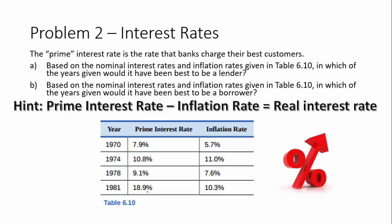Lenders love high real interest rates — that's their income. So the higher the real interest rate, the better for a lender. For borrowers, we want the lowest real interest rate. What you need to do is go year by year and calculate prime interest rate minus inflation rate for each row. The highest real interest rate is the best year to be a lender; the lowest real interest rate is the best year to be a borrower.